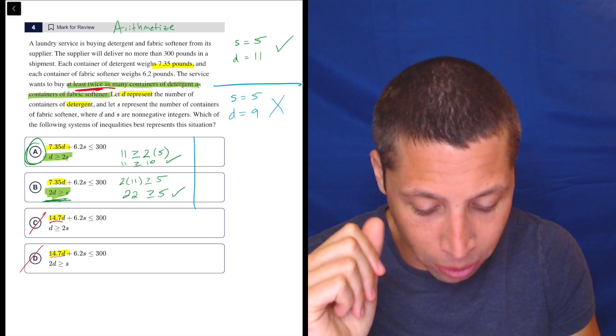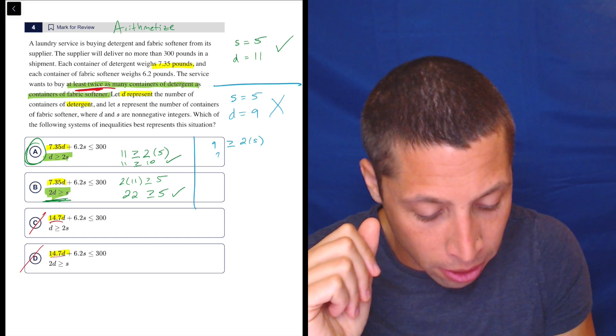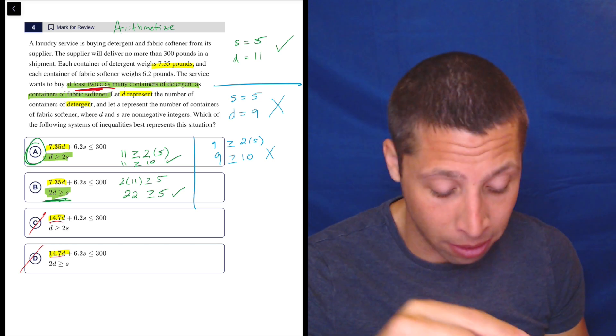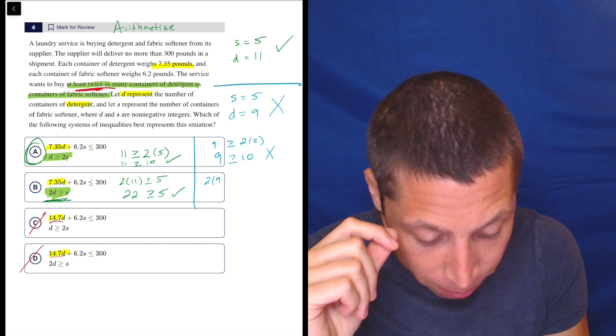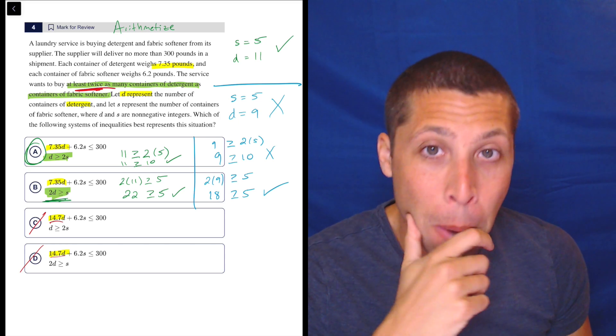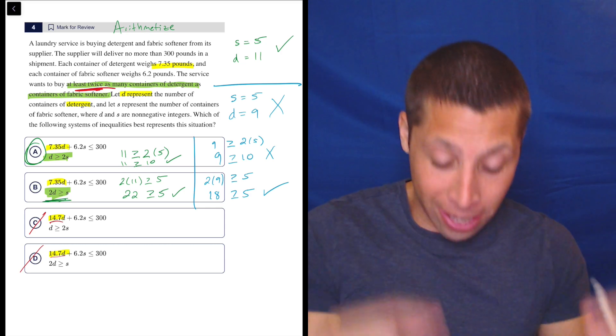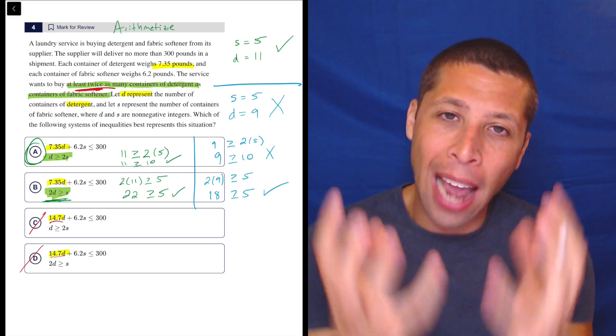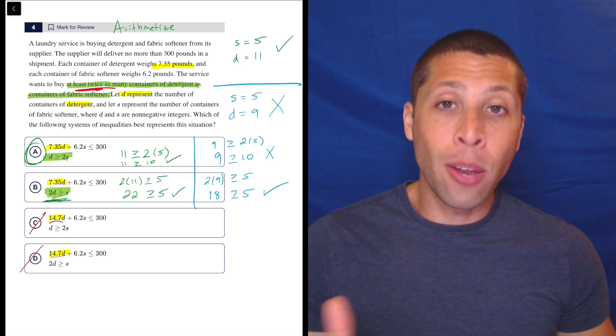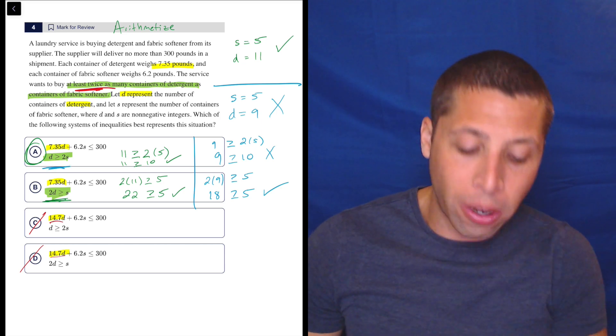But watch what happens. If we go to choice A here, D is nine, and nine is greater than or equal to two times five. Nine is greater than or equal to 10. No, it's not. So it failed, but we wanted it to fail. It should fail. But if we go to B, two times nine is greater than or equal to five. So 18 is greater than or equal to five. Yes, it is. But that's a problem. This set of detergents and softeners should not work, but it does work in choice B. So that means that that inequality isn't right. It's not capturing the situation. It's including things that it should not include. So that is proof that B is wrong. It worked when it shouldn't. That is a case of a failure of the equation. So now we have even more evidence that it's choice A.